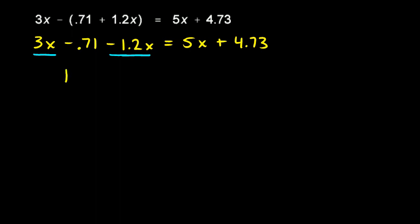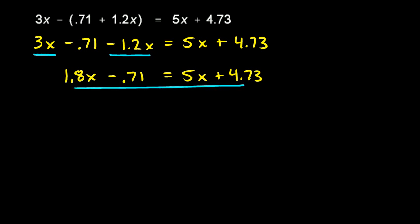So 3x minus 1.2x is 1.8x. So on the left side, I have 1.8x. That takes into account these two terms, and then I still have this minus 0.71. So I'll write that minus 0.71. And the right side I'll leave unchanged again for now. So now I have the same equation, or what I have is mathematically equivalent to my original equation, but it's getting a little bit simpler each step.